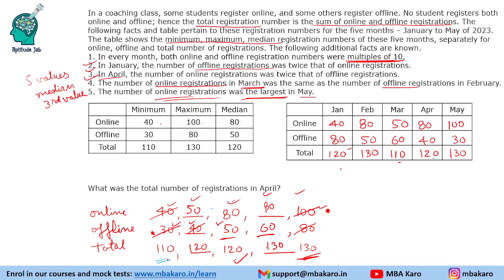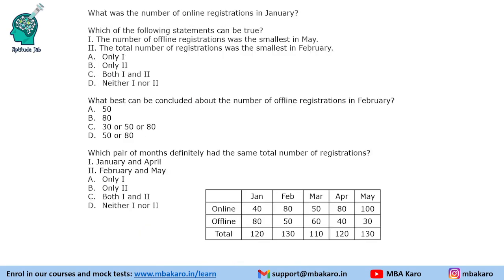Now answering the questions: The total number of registrations in April was 120. The number of online registrations in January was 40. Regarding which statements can be true — the number of offline registrations was smallest in May (true), but the total registrations smallest in February (false) — so only the first is true. The offline registrations in February were exactly 50. The pairs of months that definitely had the same total registrations are February and May (both 120 or 130), and January and April (both 120) — so both pairs 1 and 2 are correct.